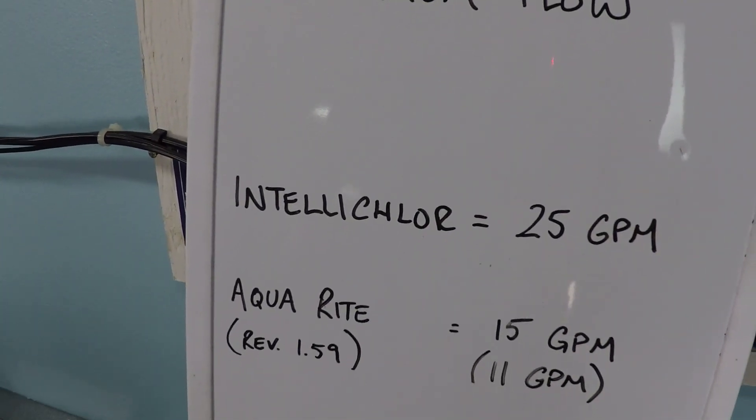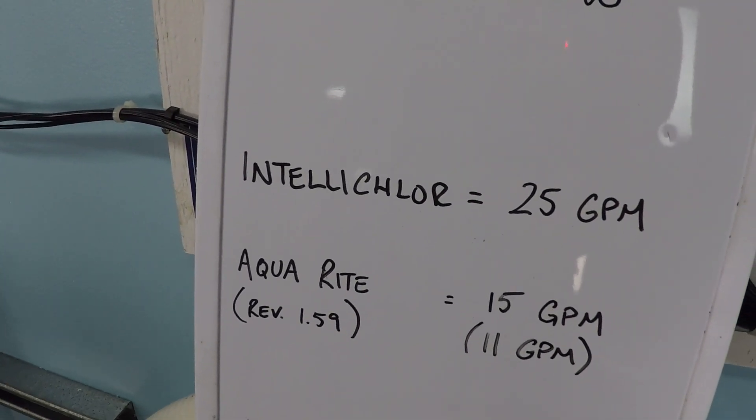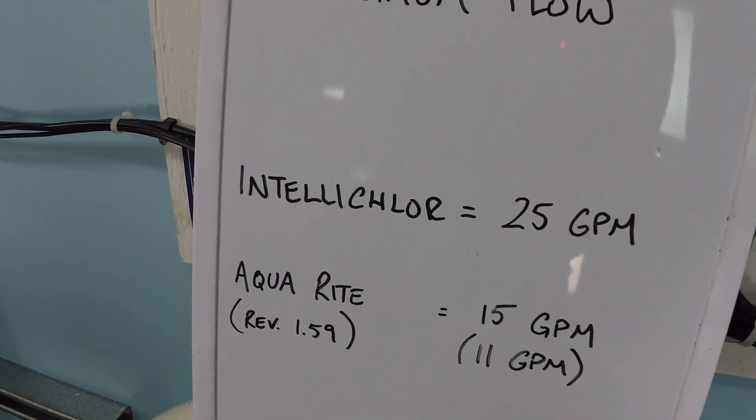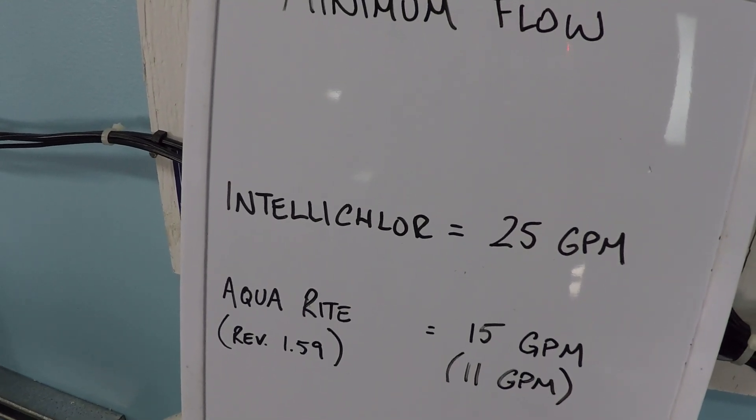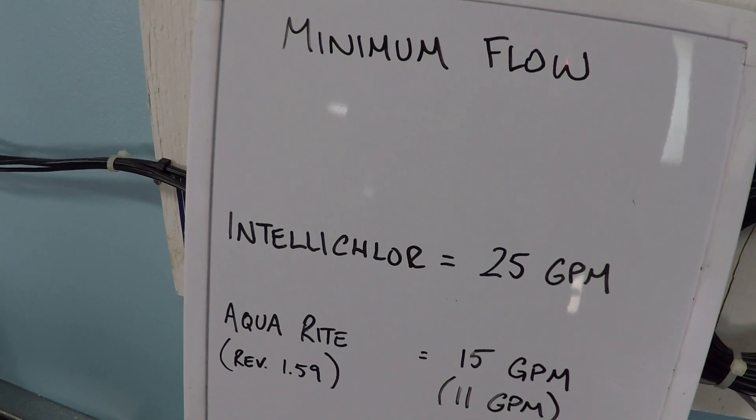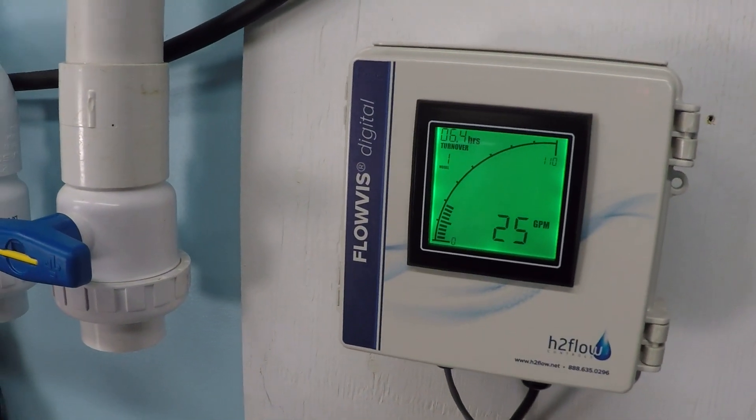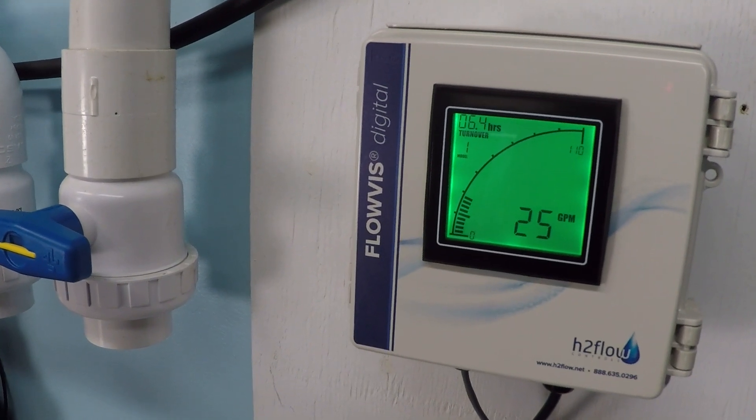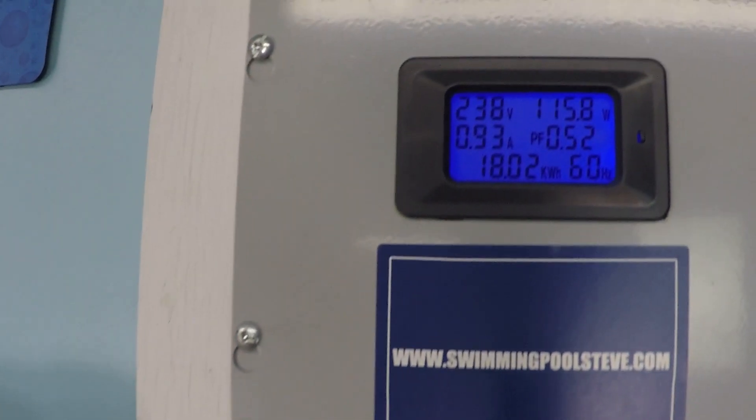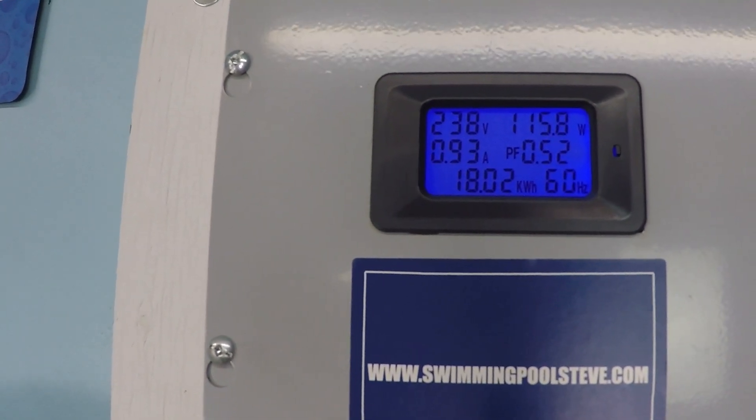That's how much power you're consuming right now, but you're achieving 25 gallons per minute, which according to the Pentair literature would be enough to close the flow switch and safely generate your chlorine with an IntelliChlor system. So it doesn't actually take very much power or a very high RPM at all in order to be able to generate chlorine for long periods of time while still consuming very low power.